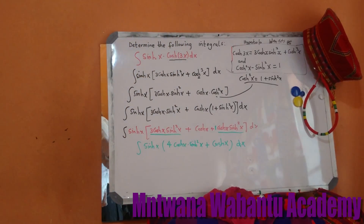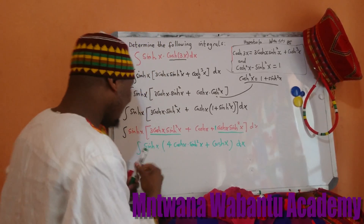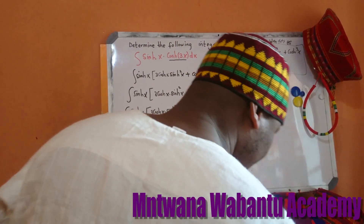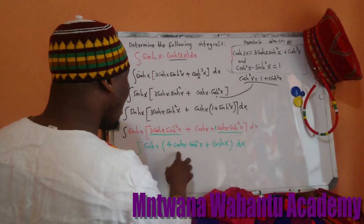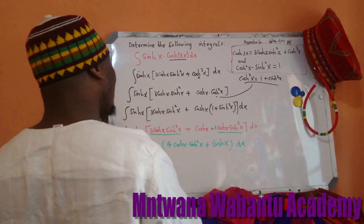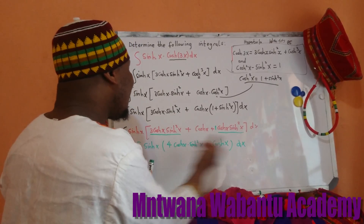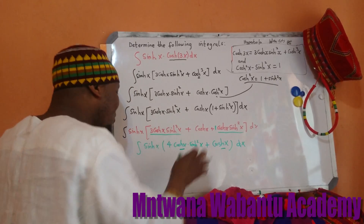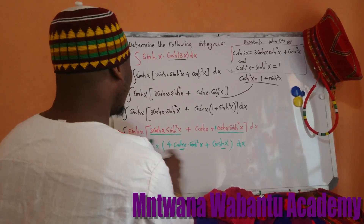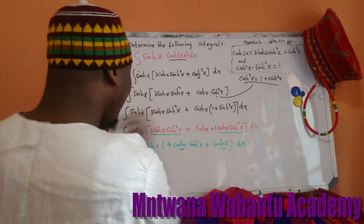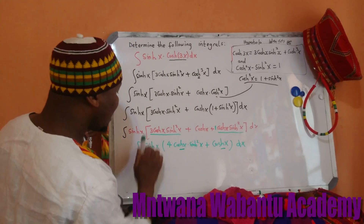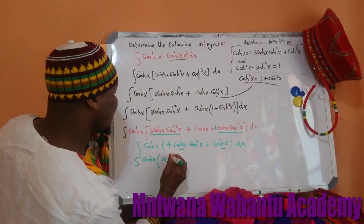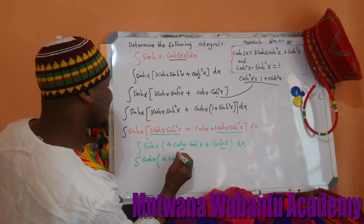Next step, I'm going to multiply in. I want to take cosh out and put sinh in. Because this sinh is going to be close to the other sinh terms, and this cosh will be separate. So I'll take cosh out and put sinh in, giving us sinh cubed.